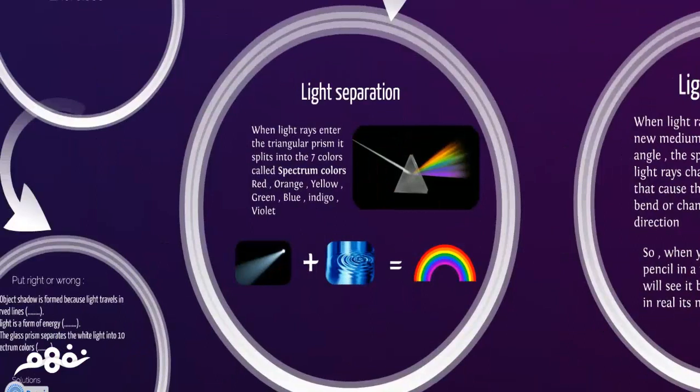Light separation. When light rays enter the triangular prism, it splits into the seven colors called the spectrum colors: red, orange, yellow, green, blue, indigo, and violet. When sunlight passes through water droplets during rain falling, which has been the droplets in the air, you will see the rainbow.